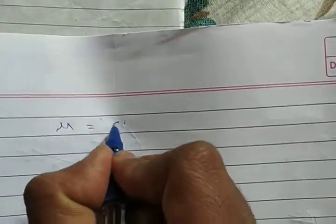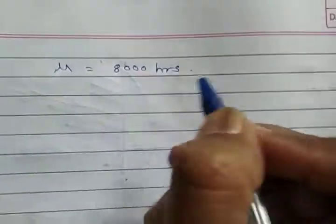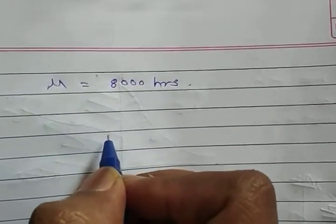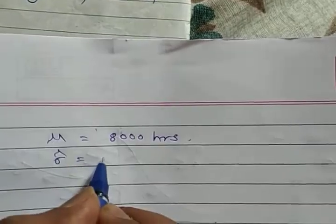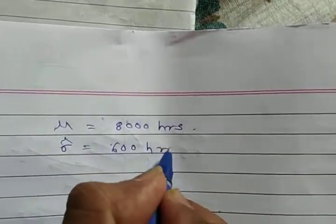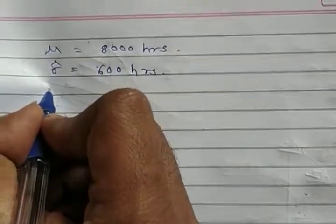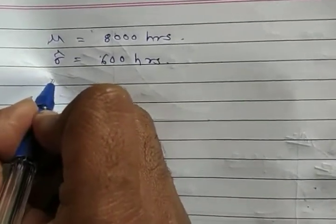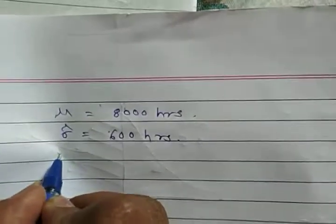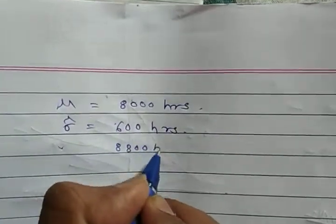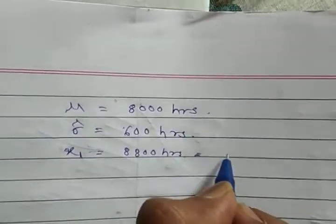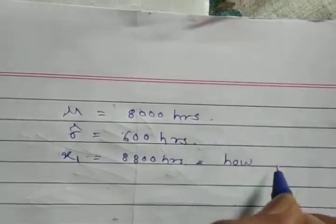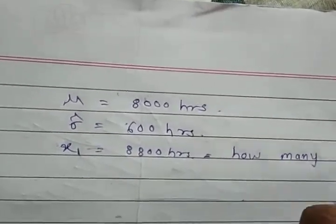The given data: the mean mu is equal to 8,000 hours, and the standard deviation is 600 hours. We are asked to find out how many bearings are likely to fail within the first 8,800 hours.